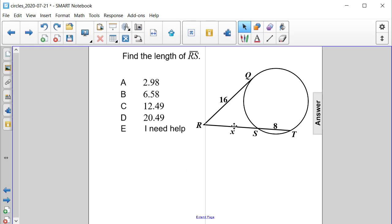Find the length of segment RS in the diagram that's been provided. Is it A, 2.98? Is it B, 6.58? Is it C, 12.49? Or is it D, 20.49?